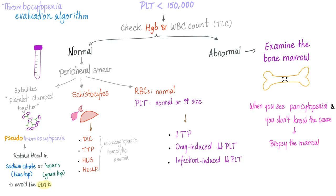The next finding to look for is schistocytes — fragmented red blood cells, also known as helmet cells. In cases of DIC, TTP, HUS, and HELLP, we have schistocytes. This is called microangiopathic hemolytic anemia. As for macroangiopathic hemolytic anemia — such as a calcified aortic valve — it can cause schistocytes but will not have thrombocytopenia. So thrombocytopenia with schistocytes is always microangiopathic hemolytic anemia.